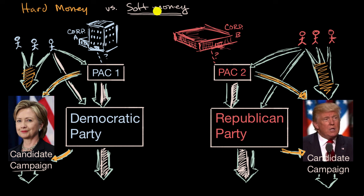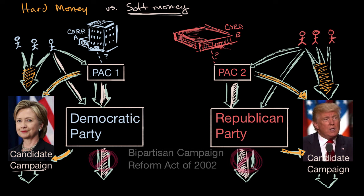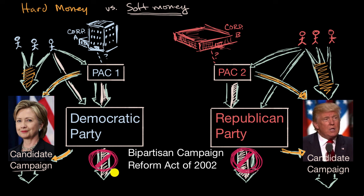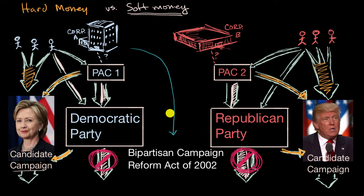An attempt to limit soft money came in 2002 with the Bipartisan Campaign Reform Act of 2002, often known as McCain-Feingold after its two Senate sponsors. Among other things, it tried to limit soft money. After this act, even party spending would have to be hard money, subjected to the caps when raising that money. It also made clear that corporations and labor unions couldn't participate in electioneering activities — spending money on issue-based ads with the intent of influencing the election, especially in the run-up to the election. This was made explicitly illegal as well.